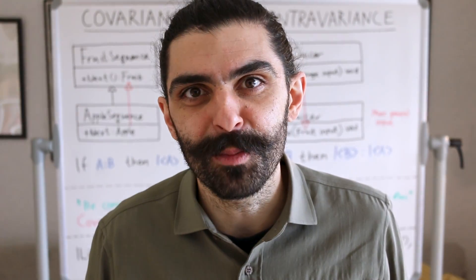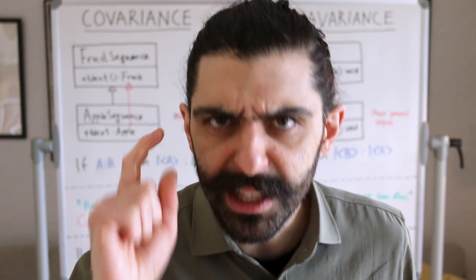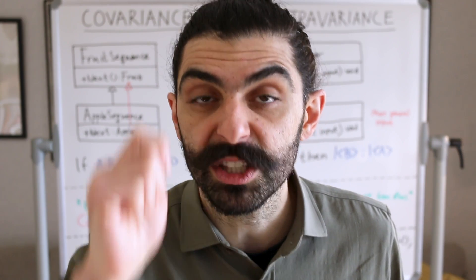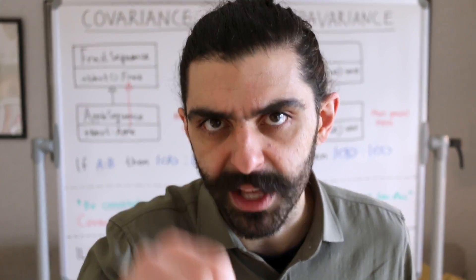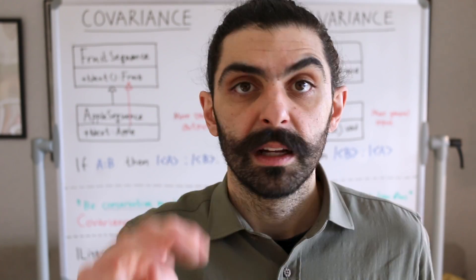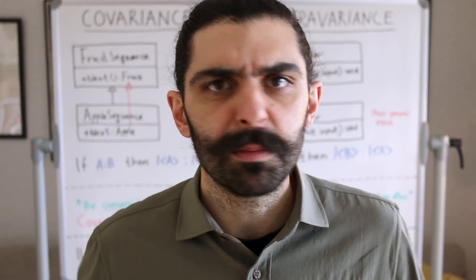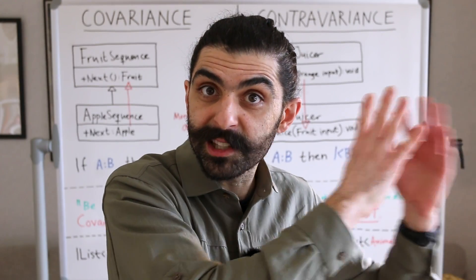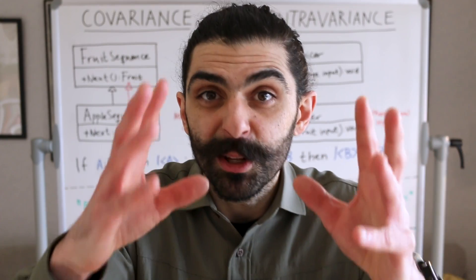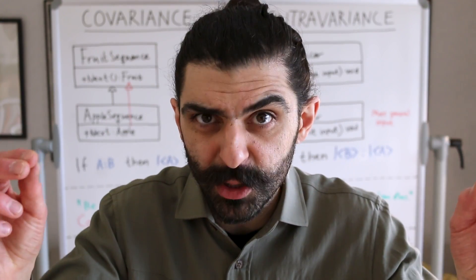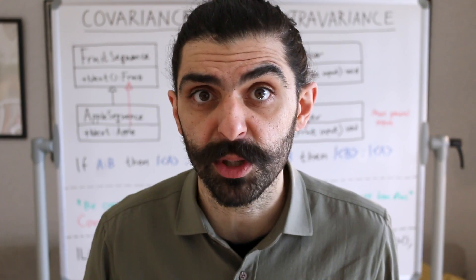In summary, here's what you need to remember: 1. Covariance allows a type to be replaced by a more specific type. 2. Contravariance allows a type to be replaced by a more general type. 3. Invariance means neither covariant nor contravariant. 4. Contravariance is safe in input, and covariance is safe in output. Now that you have a good understanding of covariance and contravariance, you'll have no problem understanding the Liskov substitution principle. Let me know if you want to talk more about variance and when it's useful. Subscribe!